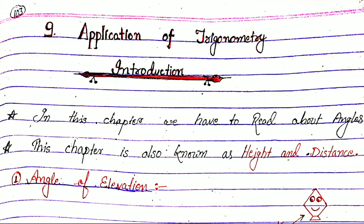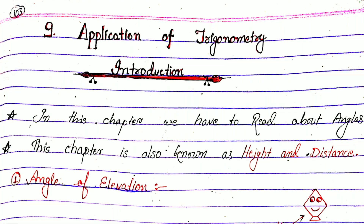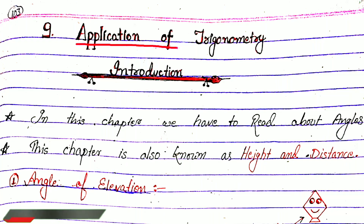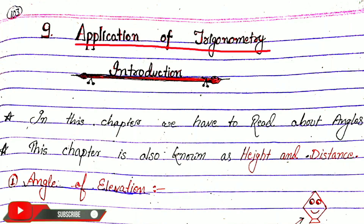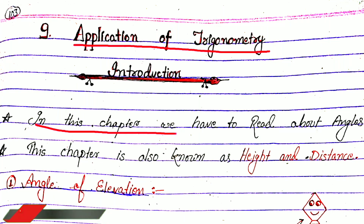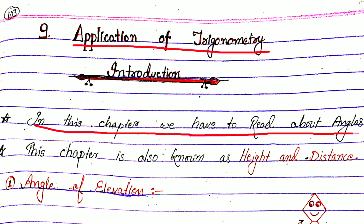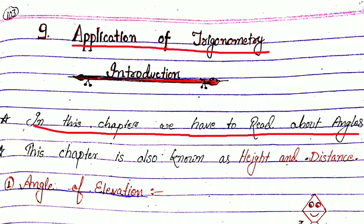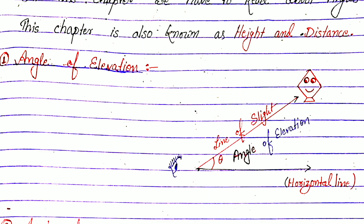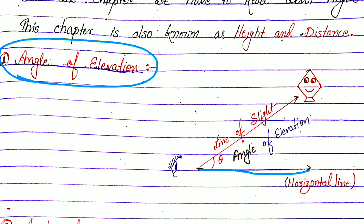Hello everyone, this is the introduction video of Applications of Trigonometry — that is Chapter Number 9. In this chapter we have to read about angles, meaning we have to find angles. This chapter is also known as Height and Distance. First of all, we have to read about the angle of elevation.